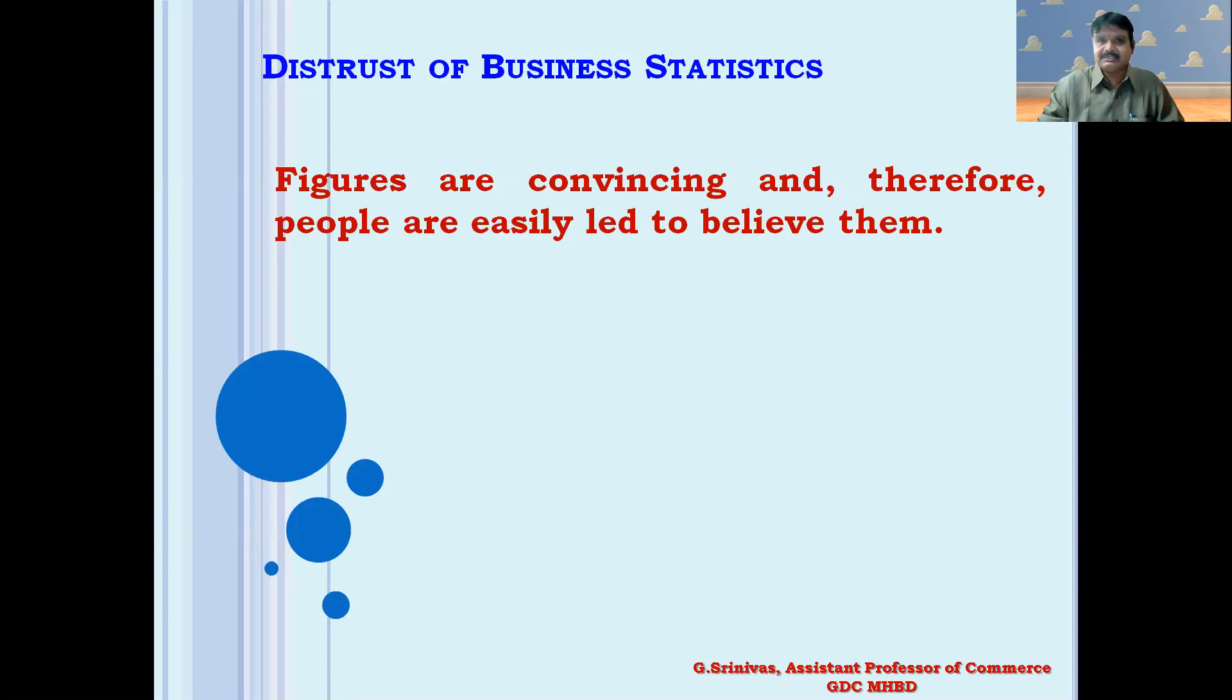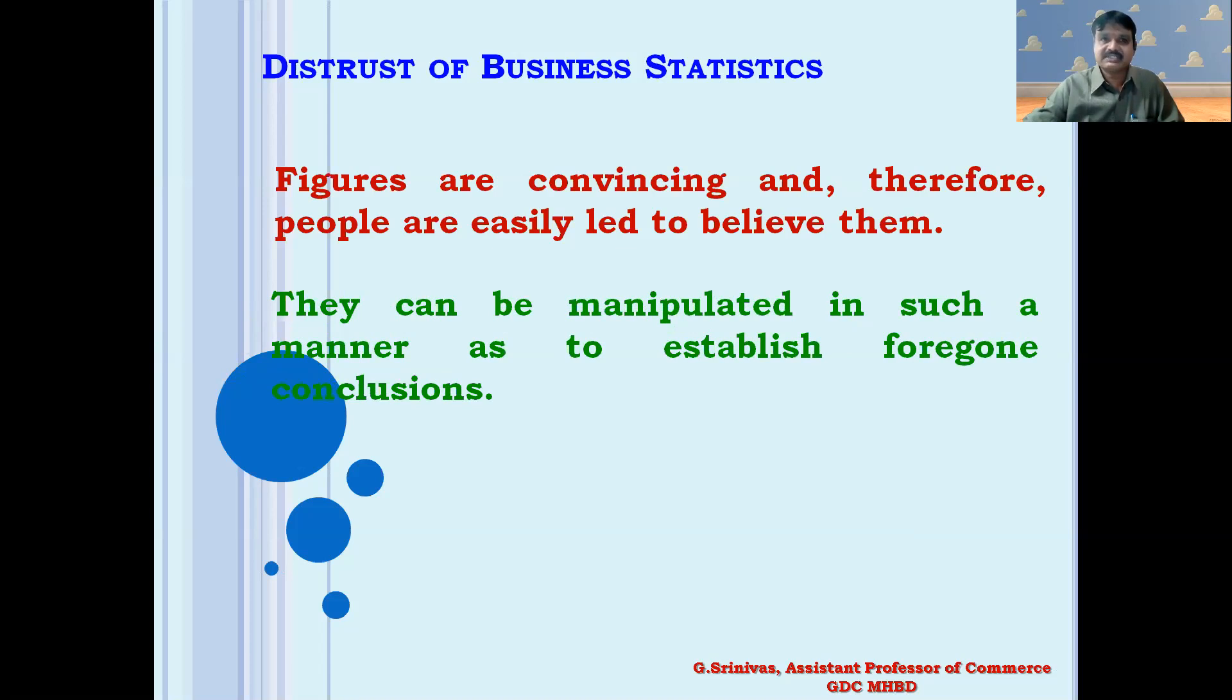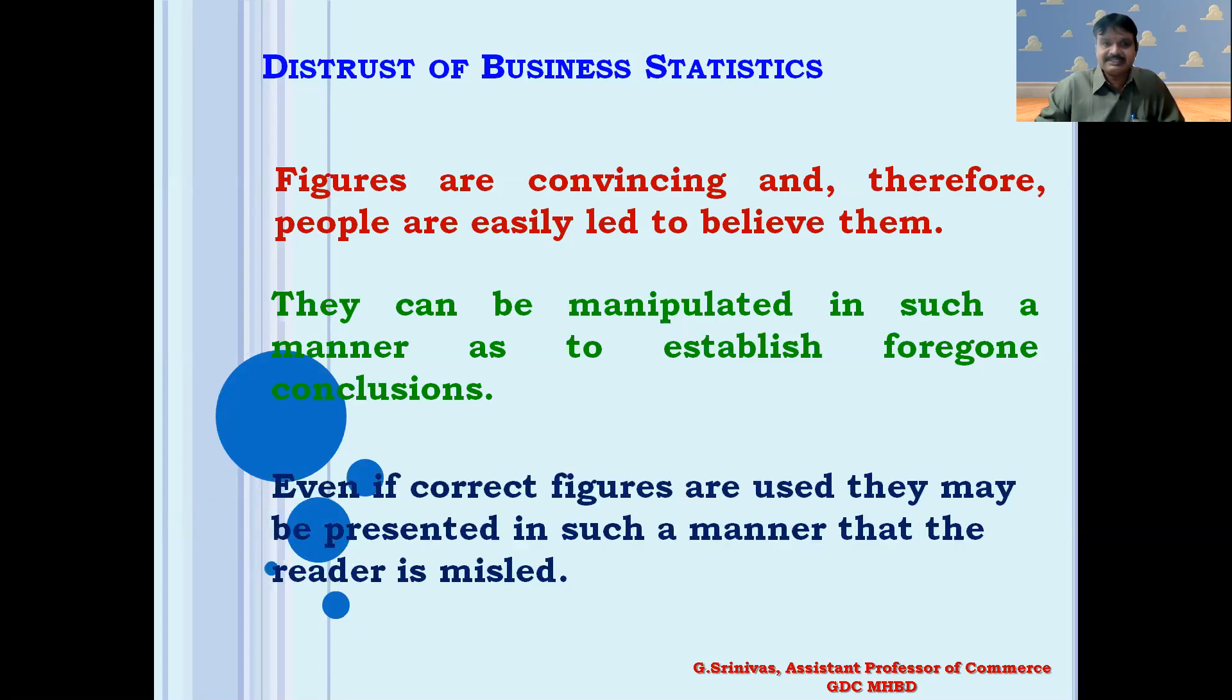By distrust of statistics, we mean lack of confidence in statistical statements and methods. It is often commented by people that statistics can prove anything. It is often said there are three types of lies: number one, lies; number two, damned lies; and number three, statistics. The following main reasons account for such views: figures are convincing, and therefore people are easily led to believe them. They can be manipulated in such a manner as to establish foregone conclusions. Even if correct figures are used, they may be presented in such a manner that the reader is misled.